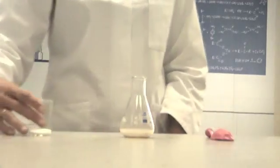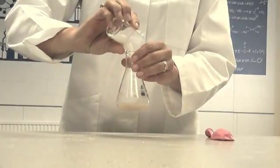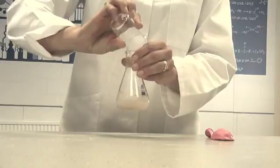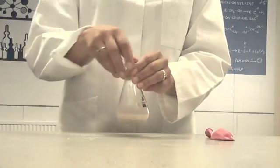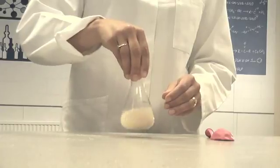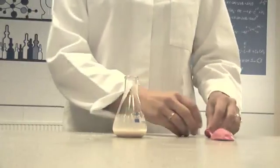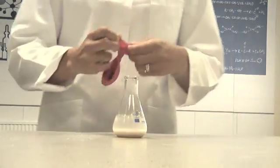Add the sugar and swirl it around some more. Place the neck of the balloon over the neck of the conical flask.